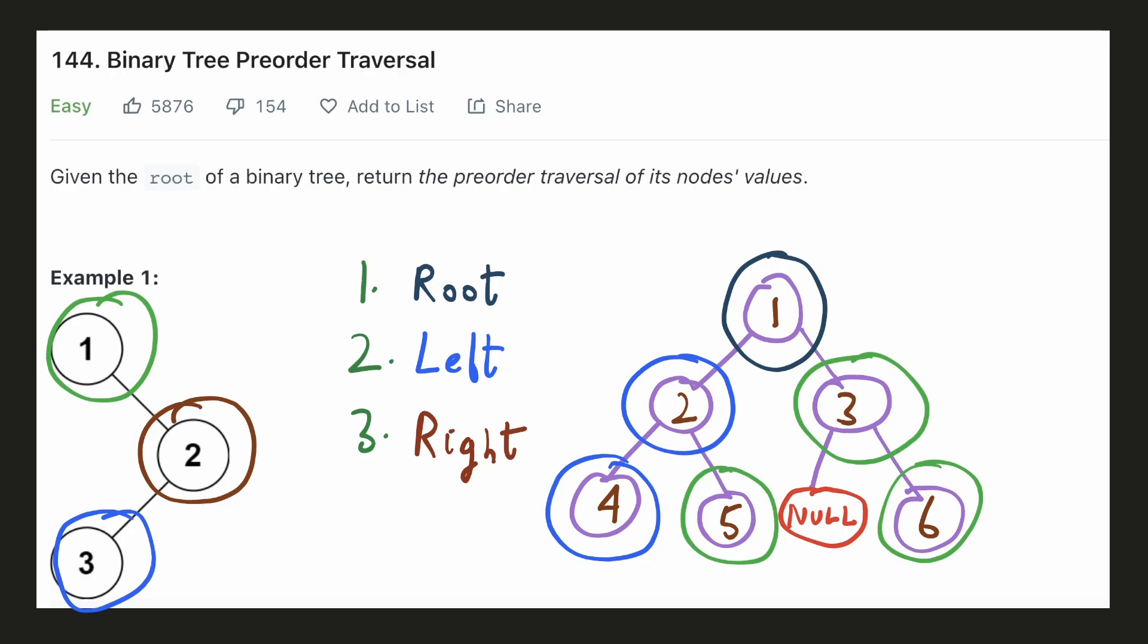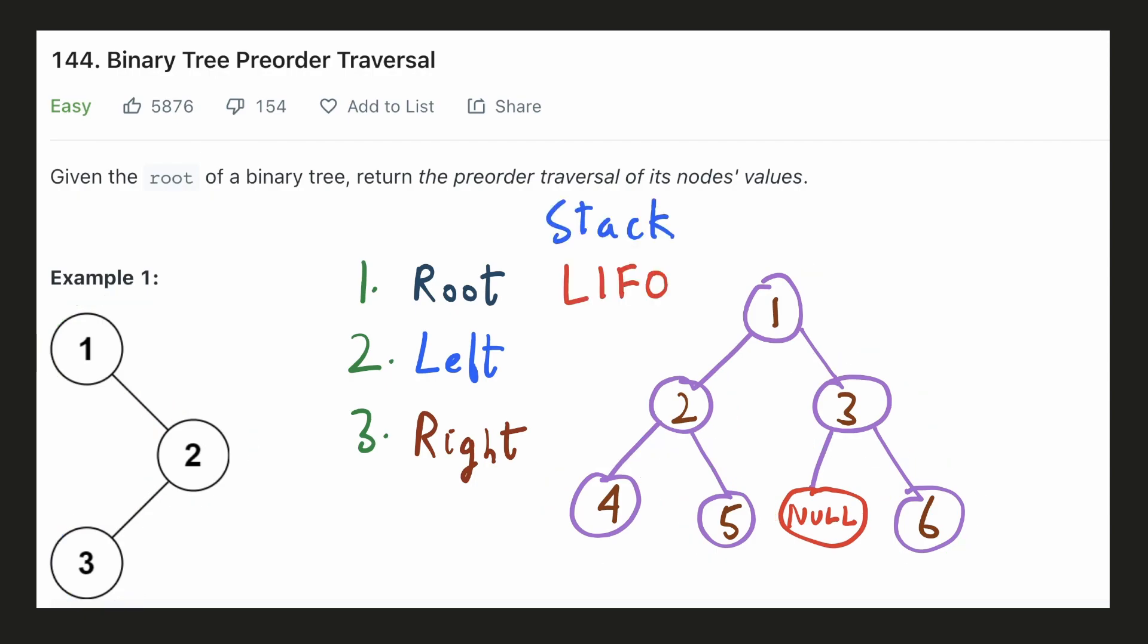For implementing the recursive solution, we can start at the root of the tree and store its value and then we can repeat this process for its left subtree and then the right subtree. We can also implement this iteratively using a stack, but one thing to be careful about is that for a stack, the last element is popped out first and since we want to access the left subtree first and then the right subtree, we must reverse their order in the stack by first adding the right subtree and then the left subtree.